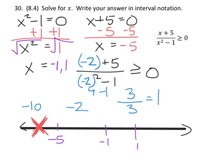3 over 3 is 1. So again, we're just working on the left side of this inequality. Is 1 greater than or equal to 0? And the answer is yes, that's true. So right here, between negative 5 and negative 1, we're going to check this off because it works.